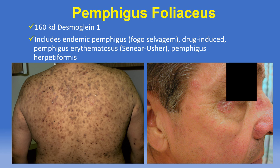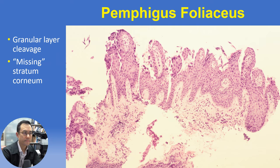Pemphigus foliaceus includes a number of clinical subtypes including endemic pemphigus in certain pockets of Brazil and Colombia, as well as medication-induced and other clinical variants exhibiting overlapping features with acute cutaneous lupus or dermatitis herpetiformis. Consistent with the superficial localization of desmoglein 1, the cleavage plane in all variants of pemphigus foliaceus is within or immediately below the granular layer. At scanning magnification the impression is sometimes of an epidermis with a missing or eroded stratum corneum, but it's actually superficial acantholysis creating this appearance, with the blister roof floating off elsewhere on the slide.